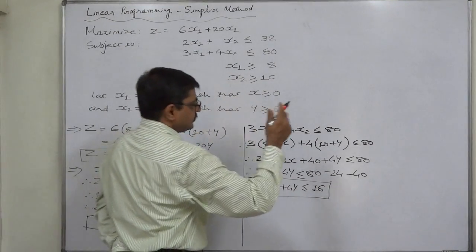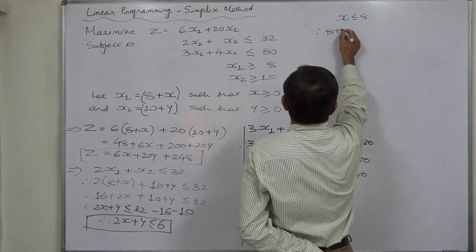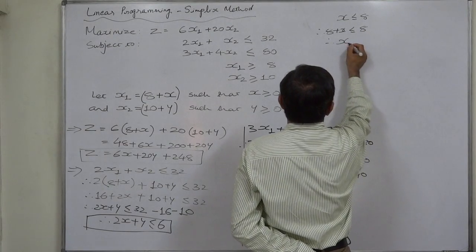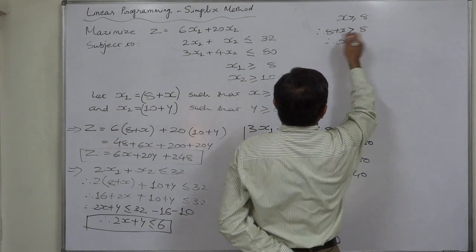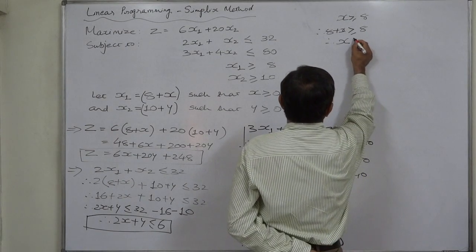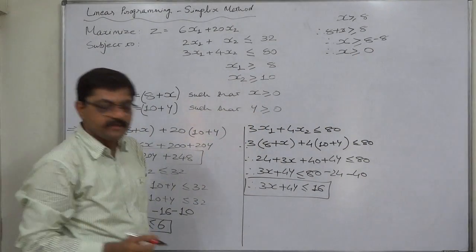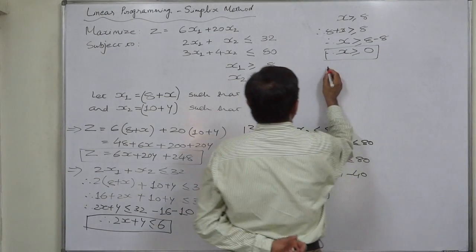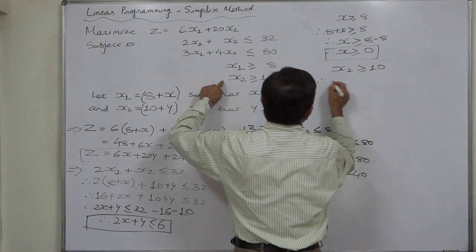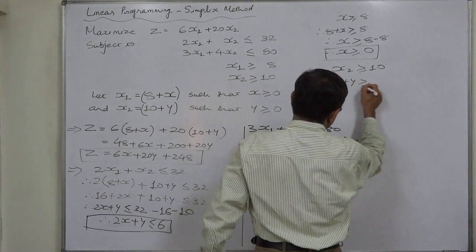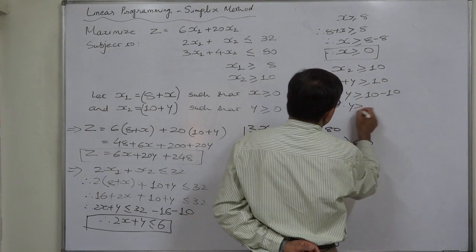Now, since x₁ ≥ 8 and x₁ = 8 + x, we get 8 + x ≥ 8, therefore x ≥ 0. This is our non-negativity condition for x. Similarly, since x₂ ≥ 10 and x₂ = 10 + y, we get 10 + y ≥ 10, therefore y ≥ 0.